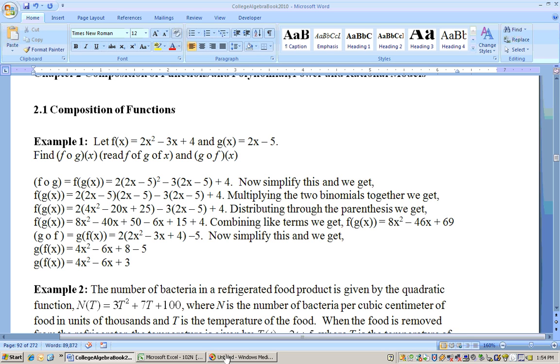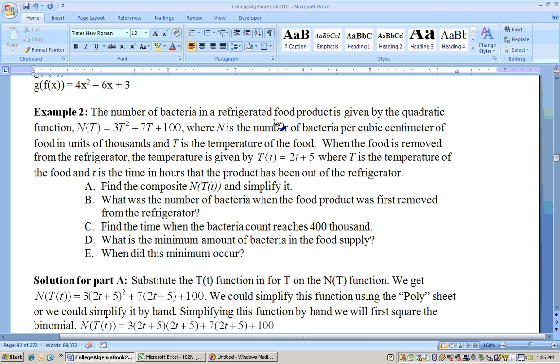We'll do a real-life example next. In this example, the number of bacteria in a refrigerated food product is given by the quadratic function N(T) equals 3T squared plus 7T plus 100, where N is the number of bacteria per cubic centimeter of food in units of thousands, and capital T is the temperature.